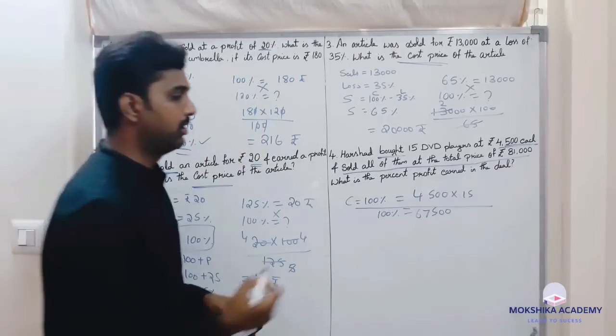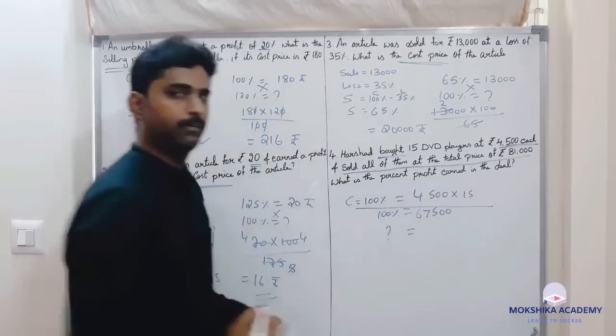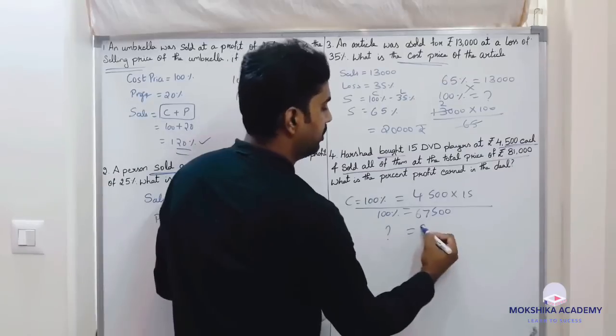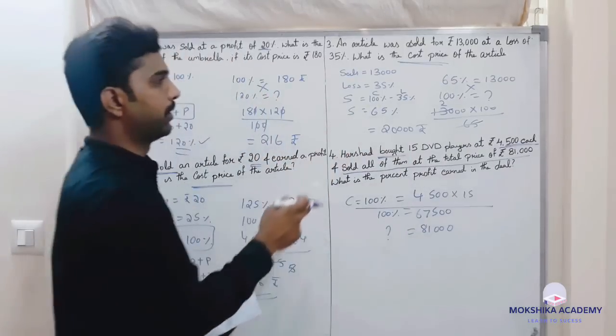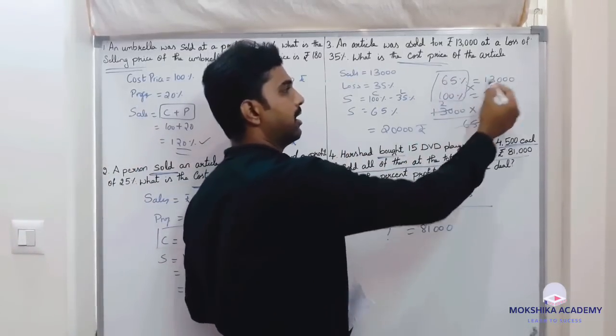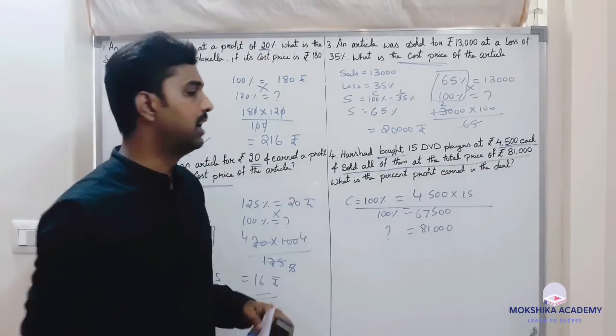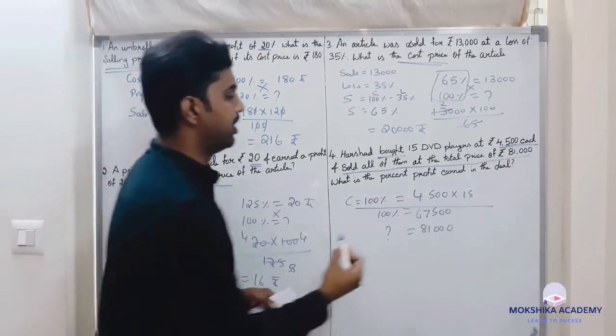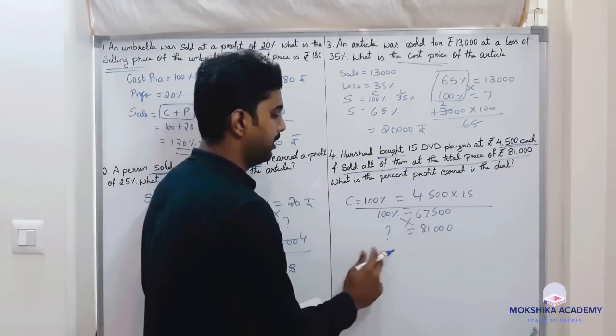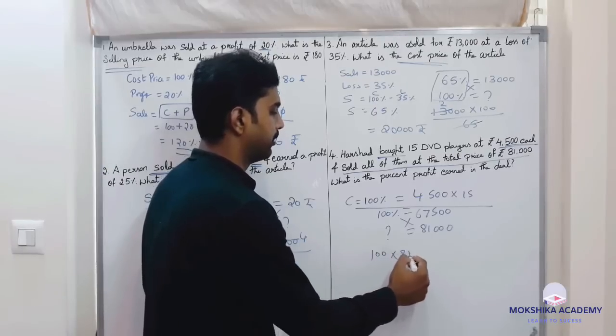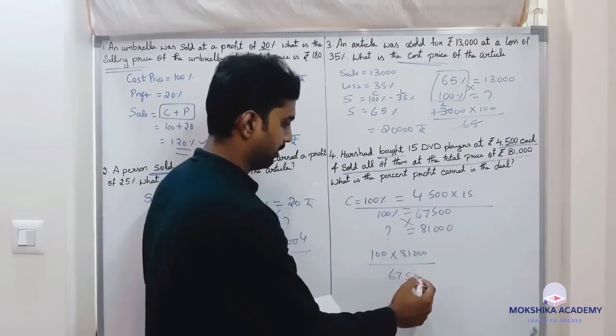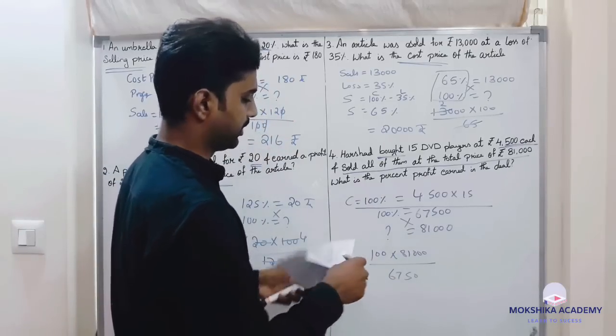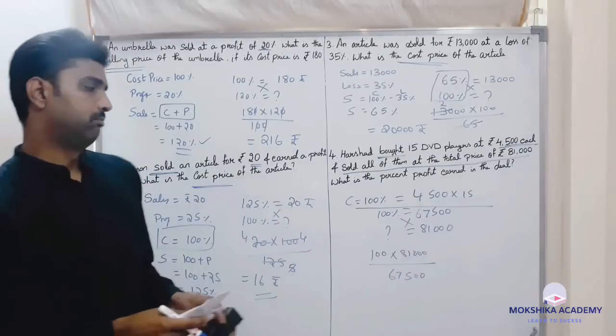Now what is the question? Sold all of them at the total price of 81,000, so sales is 81,000. What is the next? We need to find the sales percent.